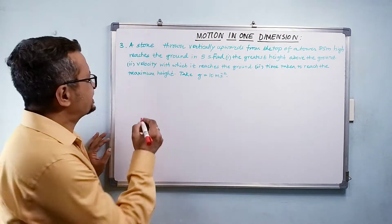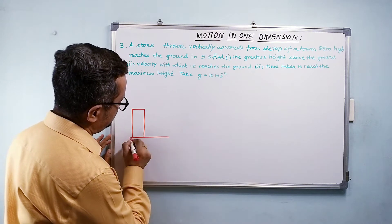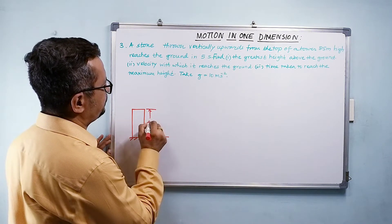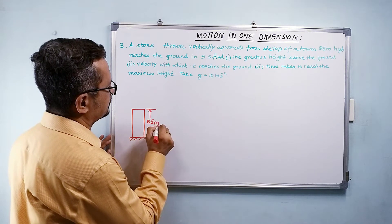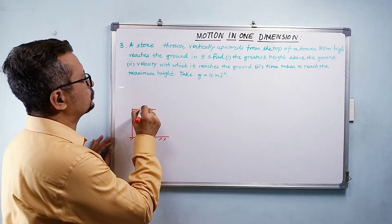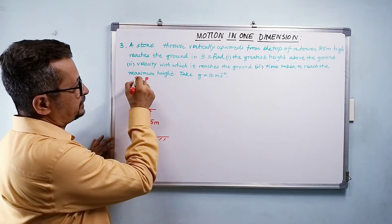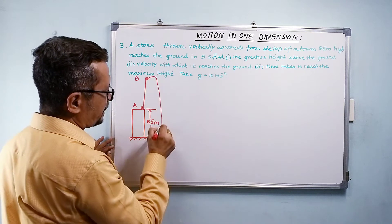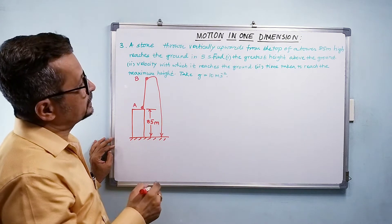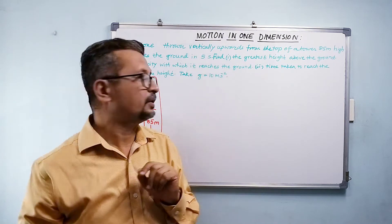Let us make a simple sketch. This is the tower, this is the ground, and this is 85 meters. The stone is thrown from point A, it reaches the maximum height at point B, and then from B it comes back to the ground.